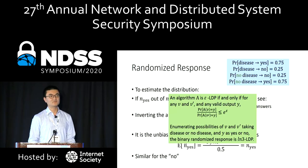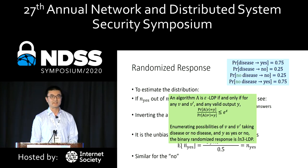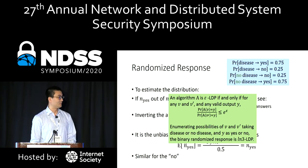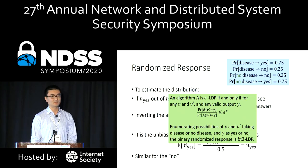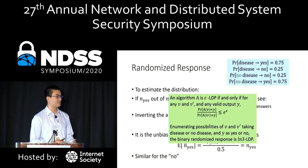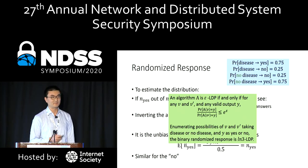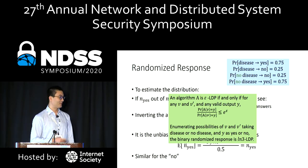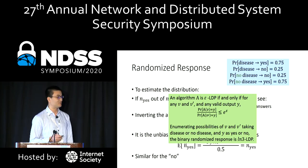What local differential privacy introduces is a very formal privacy notion for randomized response. It states that for any possible input values and any possible output, the ratio of the probability of observing the same output given different inputs is bounded by e to the epsilon. By enumerating all possibilities, we can verify that binary randomized response satisfies ln(3) local differential privacy.